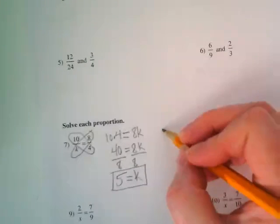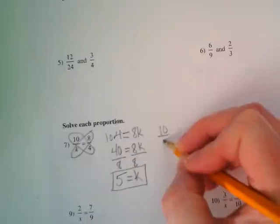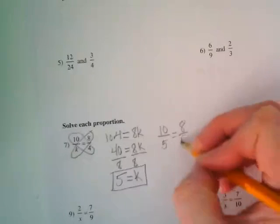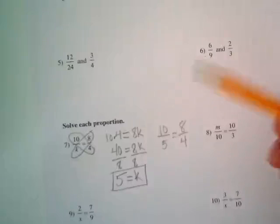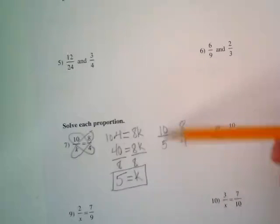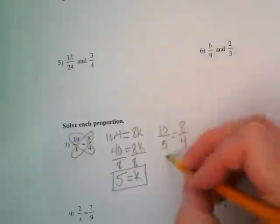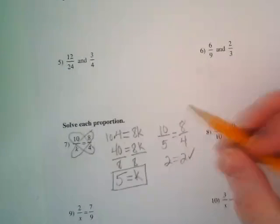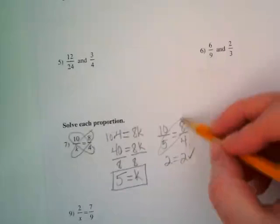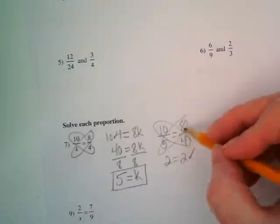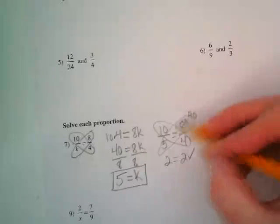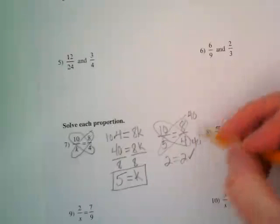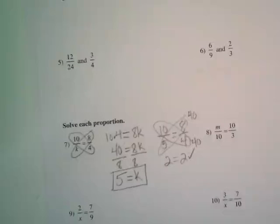We can go back and check this by saying okay, 10 over 5, is it equal to 8 over 4? There's a couple of ways to check this. One, I can divide both ratios. What's 10 divided by 5? 2. What's 8 divided by 4? 2. So 2 equals 2. That checks. Or I could cross multiply and see if I get the same number. 5 times 8 is 40. 10 times 4 is 40. So there's two different ways to check and make sure we were right.